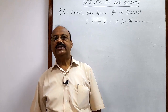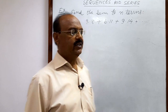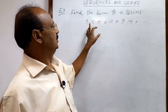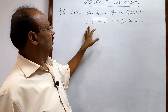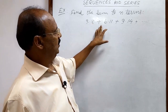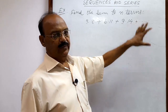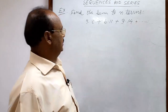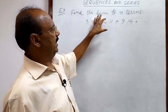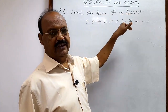Let us see a question from the chapter Sequences and Series. The question is: find the sum to n terms of the series 3×8 + 6×11 + 9×14 + ... We have to find the sum to n terms of this series.